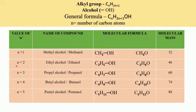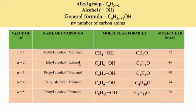For N equal to 2, we get C2H5OH, or we can write it as C2H6O. This is a derivative of ethane because it has 2 carbon atoms. Hence the name will be ethane, but E is replaced by O-L, giving the IUPAC name ethanol. The alkyl group here is ethyl, and the functional group is alcohol.